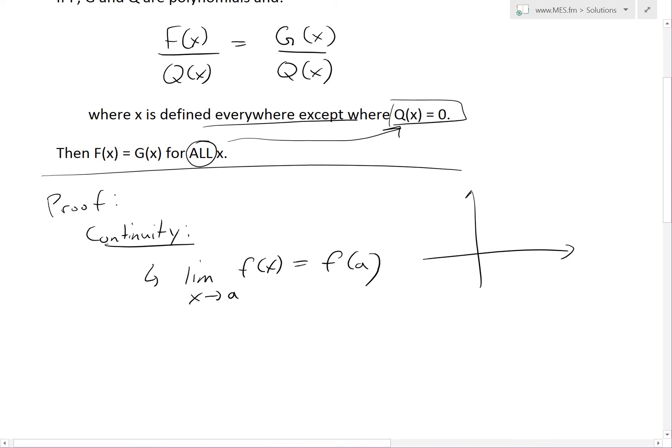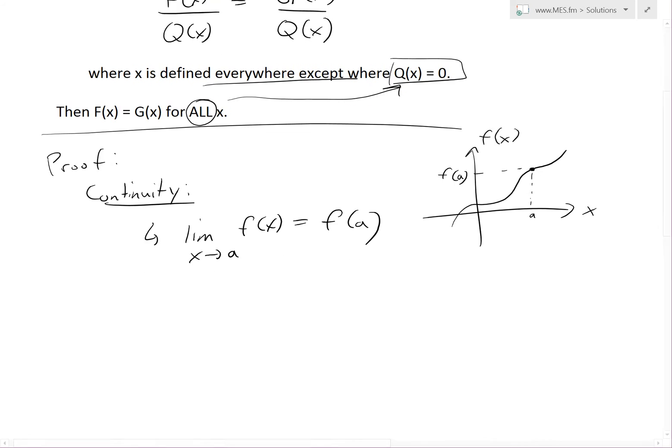And if you were to graph it, it just looks something like this, this is F(x), this is x right here, it's just continuous everywhere. So you could draw a straight line everywhere, and this value exists right here. This is a, this is F(a). So basically, as you get closer and closer, you just get this point. So that's all continuity is.